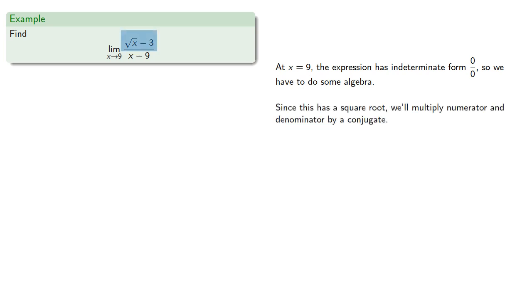Since this has a square root, we'll multiply numerator and denominator by a conjugate. And since square root of x minus 3 is a subtraction, the conjugate will have these same terms added.